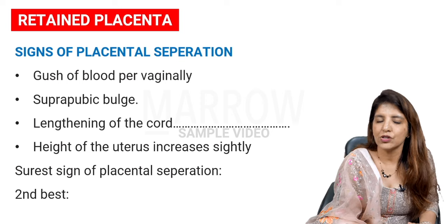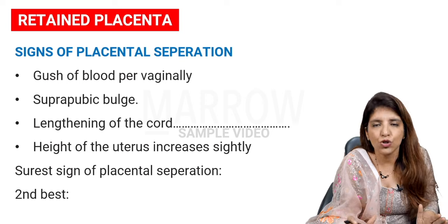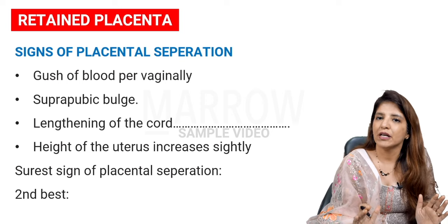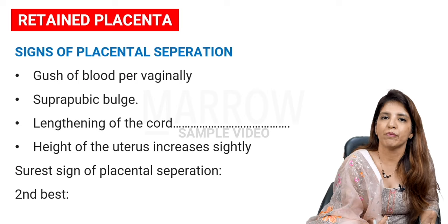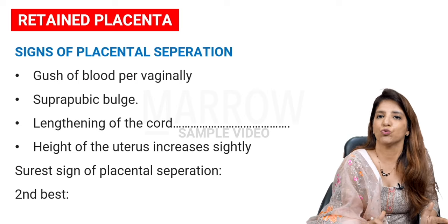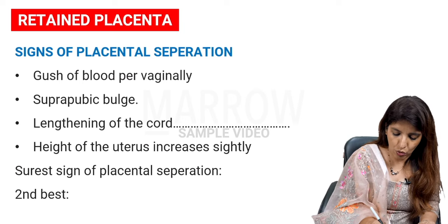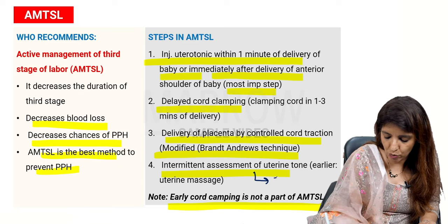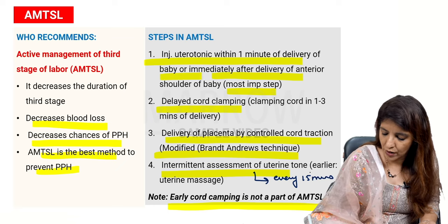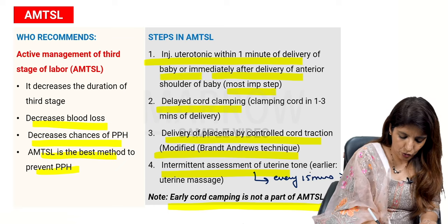All steps of AMTSL are very important. Remember: early cord clamping is not part of AMTSL, and the fourth step is now intermittent assessment of uterine tone. Uterine tone should be assessed every 15 minutes for two hours after delivery.